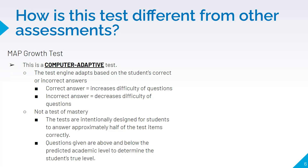How is this test different from other assessments? The math growth test is a computer-adaptive test. As a student correctly and incorrectly answers test items, the test is individually tailoring the skills and content each student is ready to learn. This is why students are expected to only answer correctly approximately half the questions. If the student answers correctly, the questions will increase in difficulty. If the student answers incorrectly, the items will decrease in difficulty.